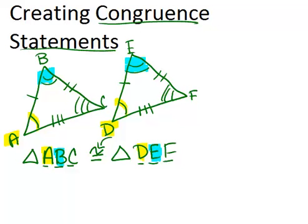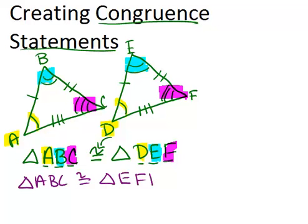So B matches with E, so since B came next here, E had to come next here. And similarly for C and F they match so they each had to come at the end. Okay so it would be wrong to say triangle ABC is congruent to triangle EFD.